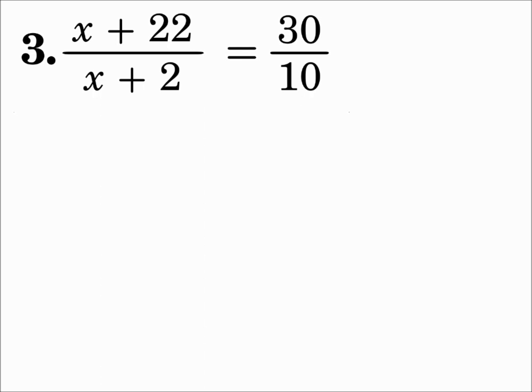Number three. x plus 22 over x plus 2 equals 30 over 10. So we'll do 10 times x plus 22. And remember to put the x plus 22 in parentheses. Since it's a polynomial there with adding or subtracting, it's still 10 times the whole thing. So remember to put it in parentheses. And that equals 30 times x plus 2. And the x plus 2 also goes in parentheses. It's 30 times the whole thing. So now solve.